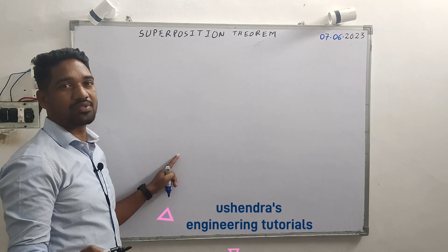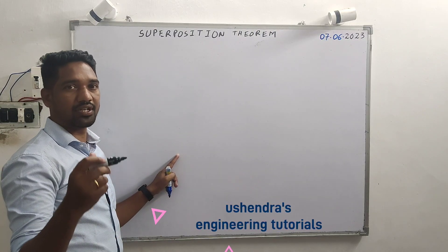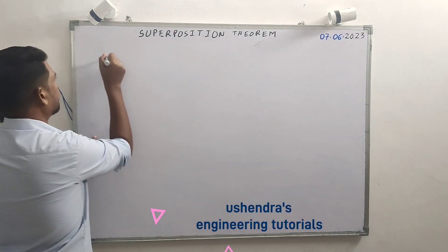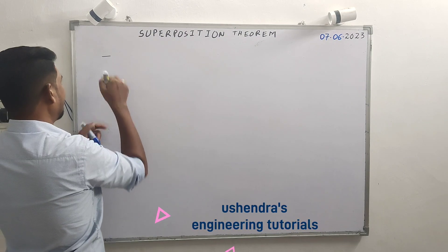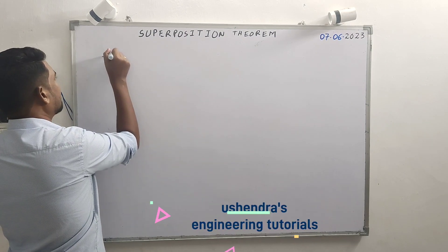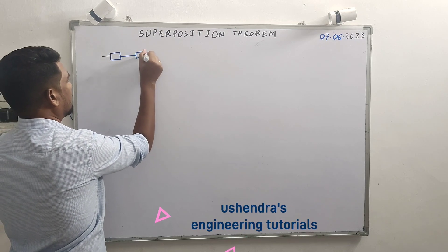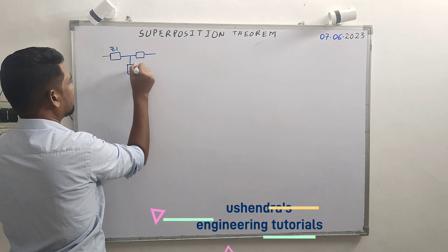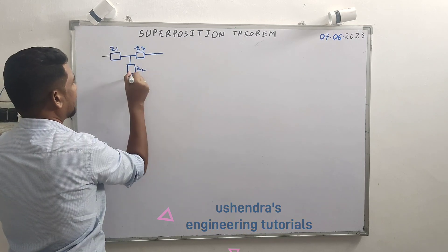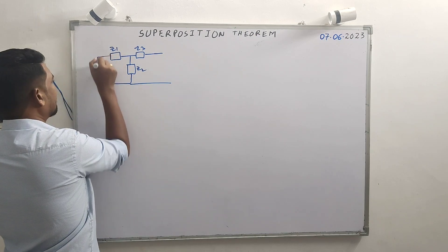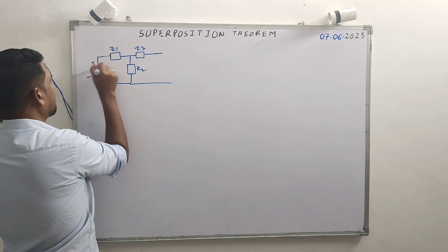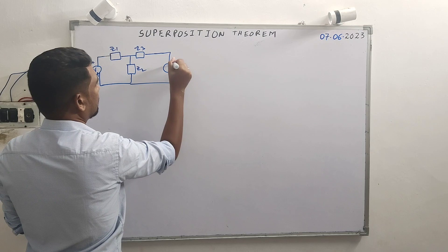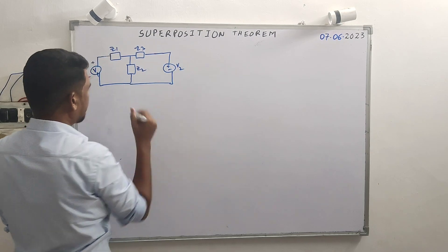Hi, network analysis — an important theorem: state and proof. The proof of the superposition theorem. Consider a random circuit with impedances Z1, Z2, Z3, and supply voltages plus and minus V1, and another voltage plus and minus V2.